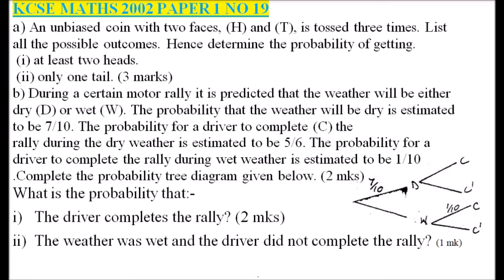This was tested in the 2002 paper, question 1 number 19. We are told an unbiased coin with two faces, head and tail, is tossed three times. List all the possible outcomes, then determine the probability of getting at least two heads and only one tail.